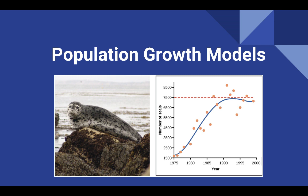Hey everyone, welcome to another AP Environmental Science Lecture. In this lecture, we're going to look at how scientists use models to predict how things change in the future. Especially in regards to population ecologists, they use growth models to incorporate density-dependent and density-independent factors to predict and explain changes in population sizes. These models are very important tools for population ecologists.